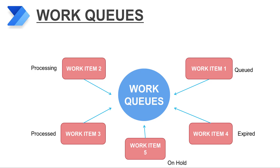First, we will learn what is a work queue. In Microsoft Power Automate, a work queue is a centralized hub that stores process-relevant data and manages a list of work items that need to be completed. Work queues are a highly versatile tool for managing workloads more effectively and ensuring that important work is completed on time, regardless of the complexity of the process or the size of the automation they are being used for.